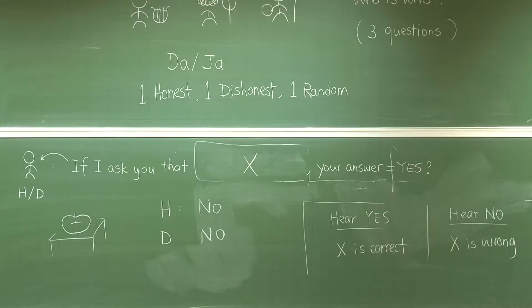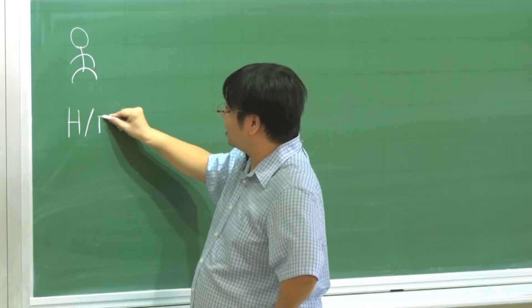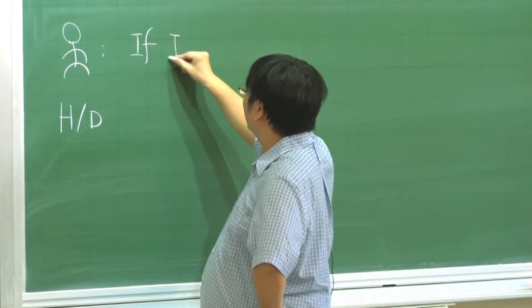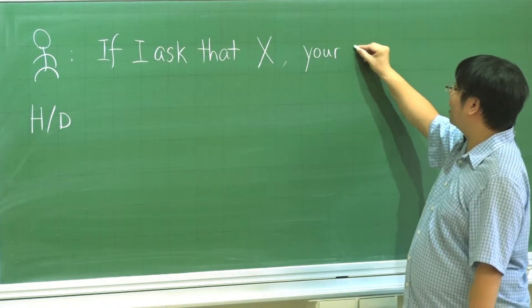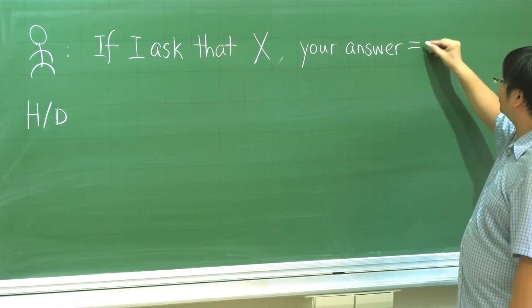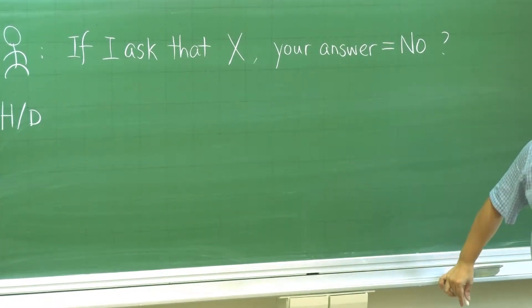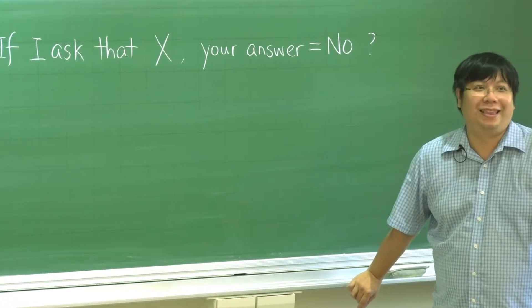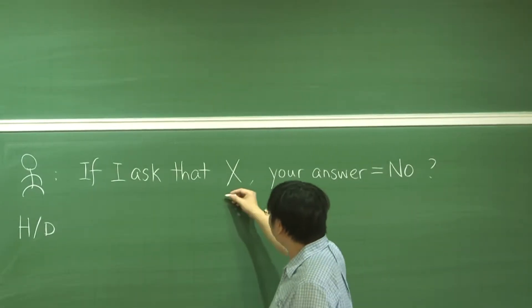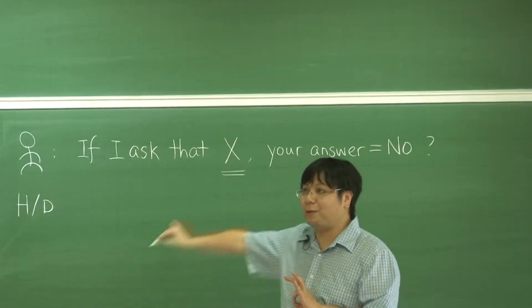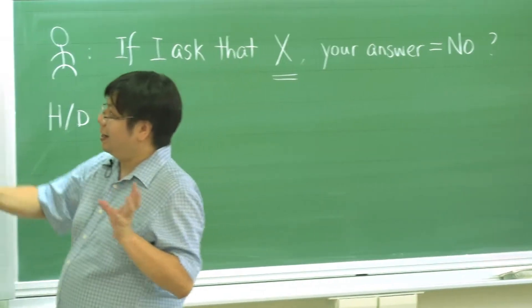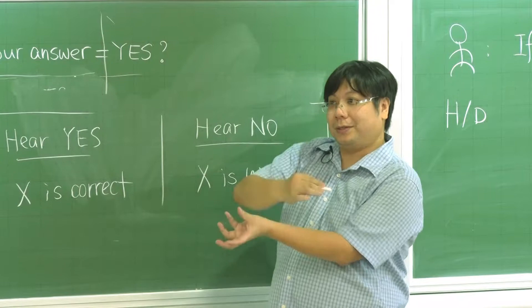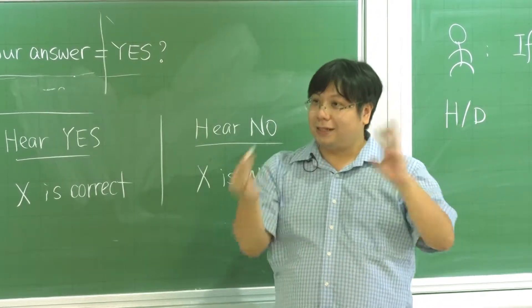Let me change the question slightly — this one could be honest or dishonest. If I ask you that x is correct and your answer is 'da,' I just change one word from yes to no. What will happen? If you are very quick you will see that by changing 'yes' to 'no,' we are changing the last step to the opposite sign, so every answer will be opposite.